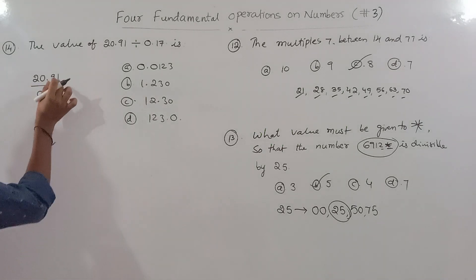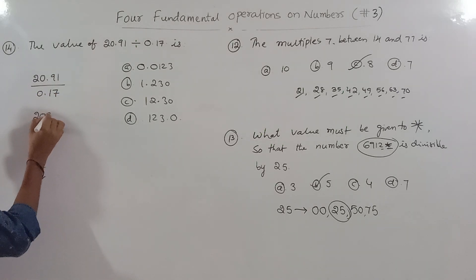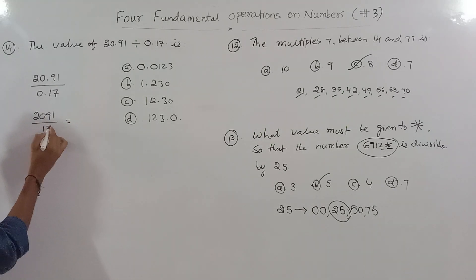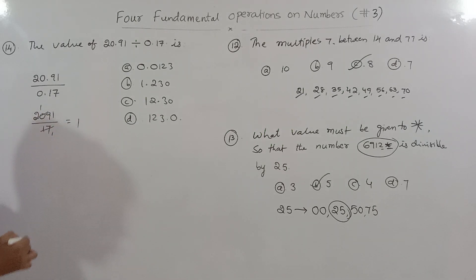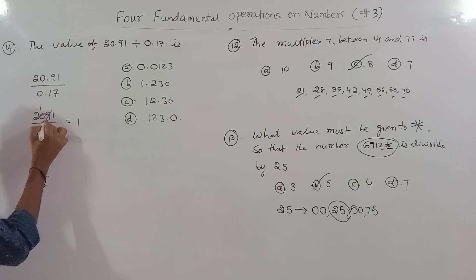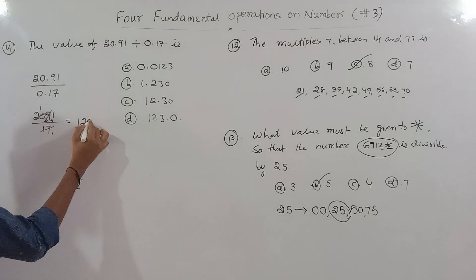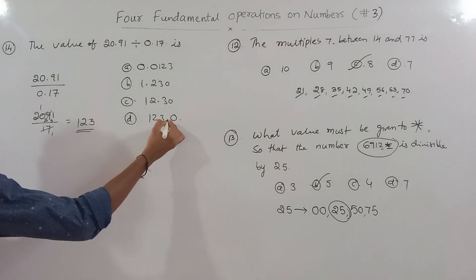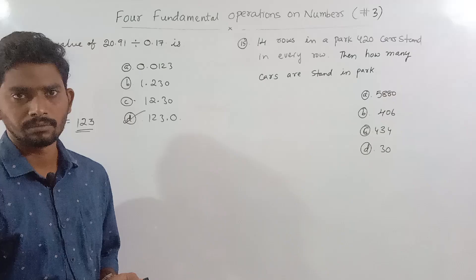20.91 divided by 0.17 — multiply both numerator and denominator by 100 to remove decimals: 2091 ÷ 17 = 123. So the answer is 123.0.